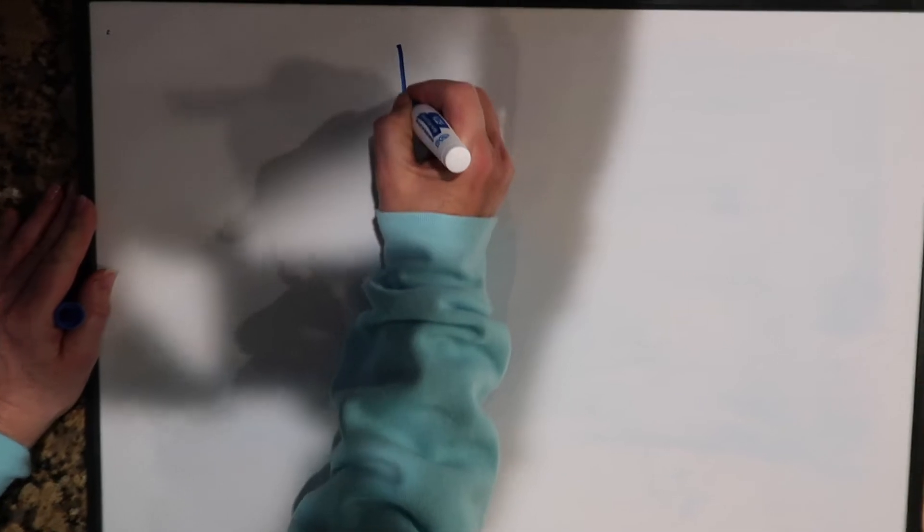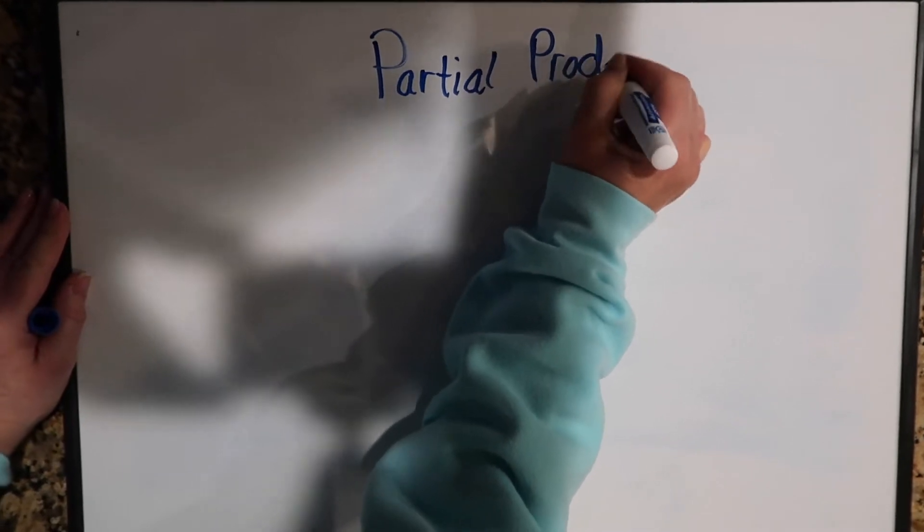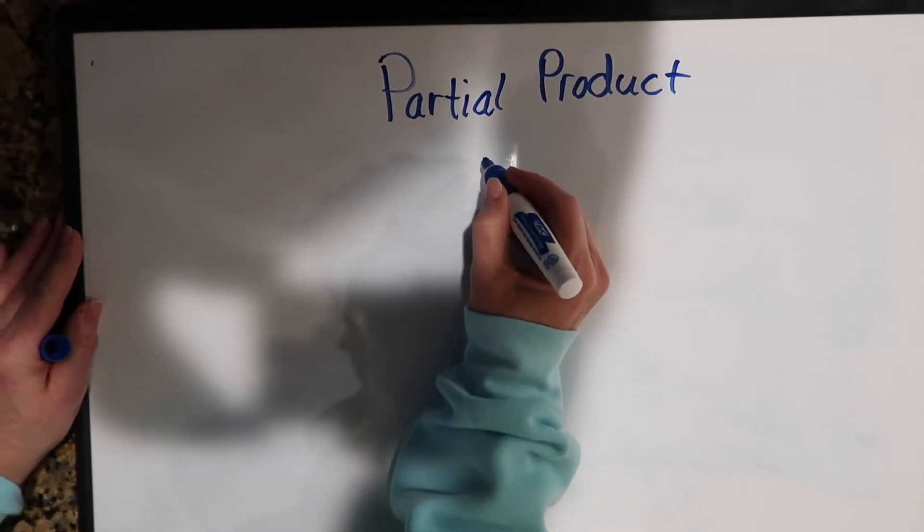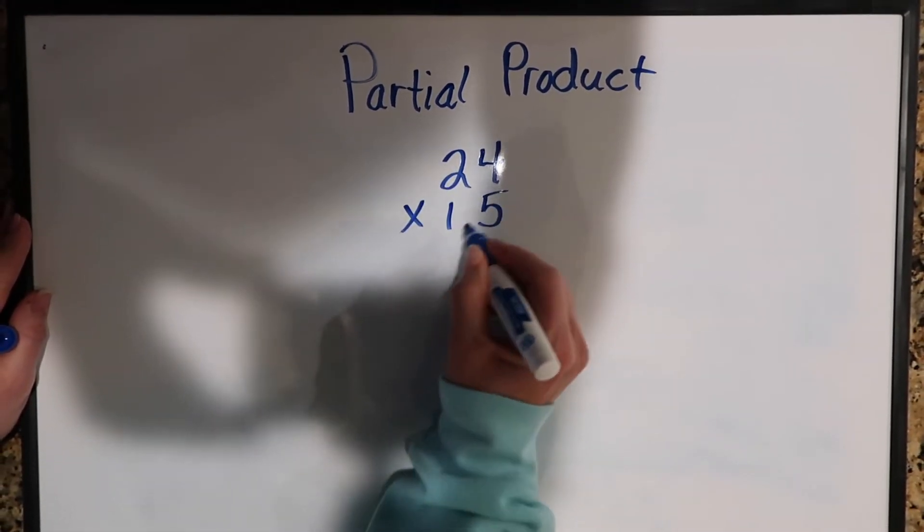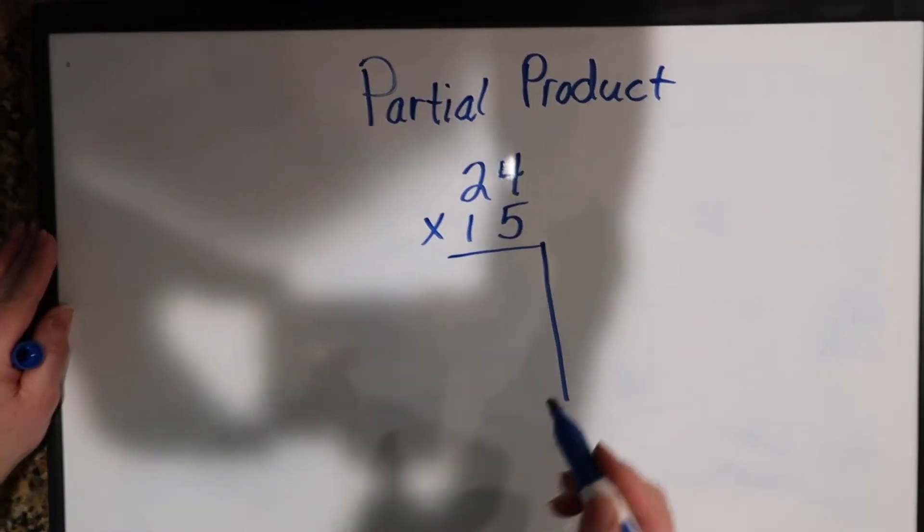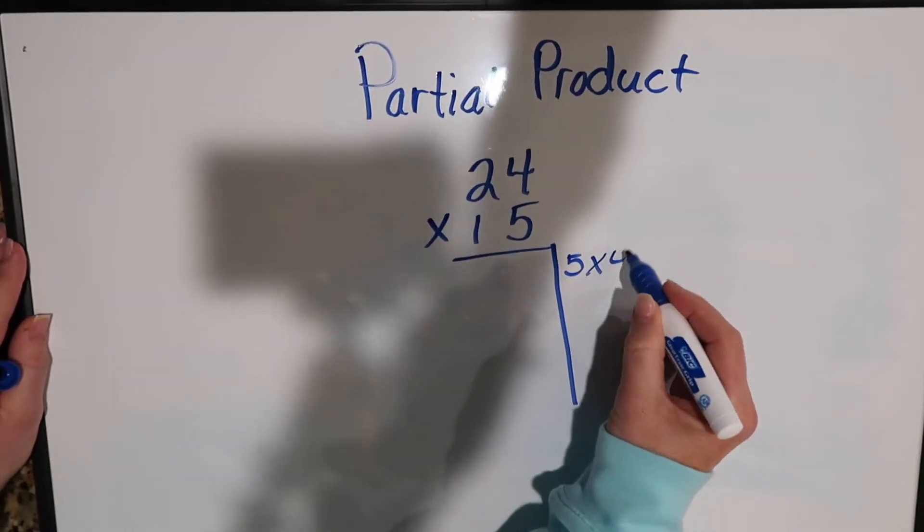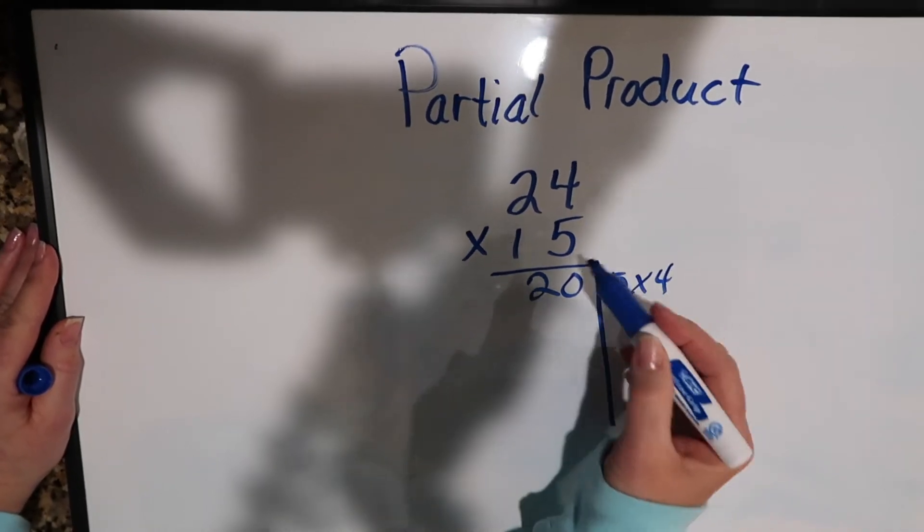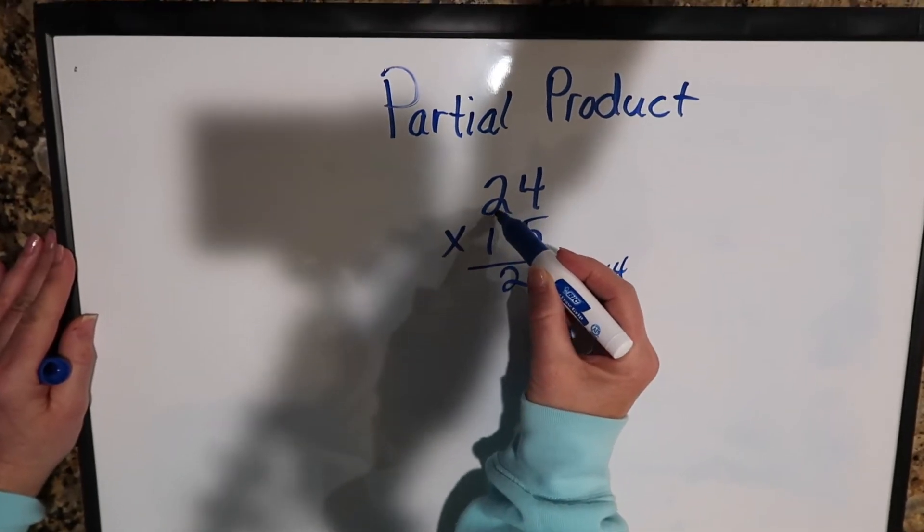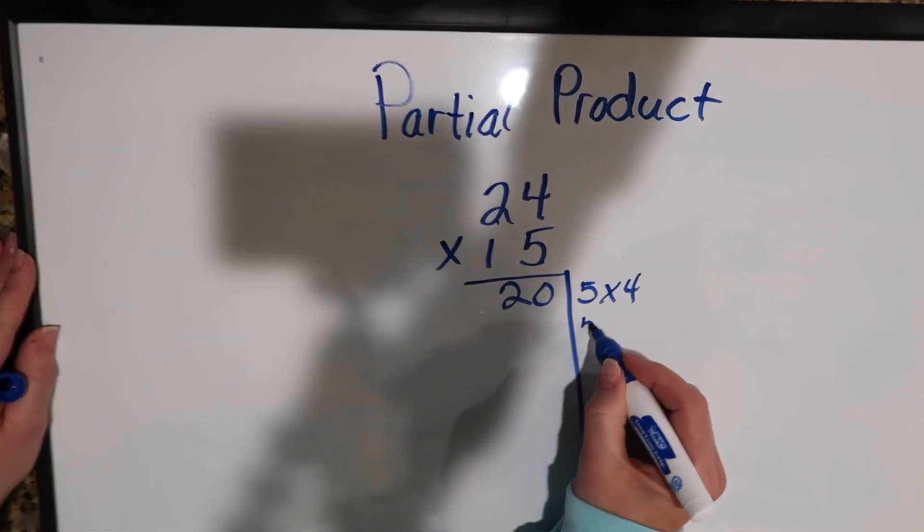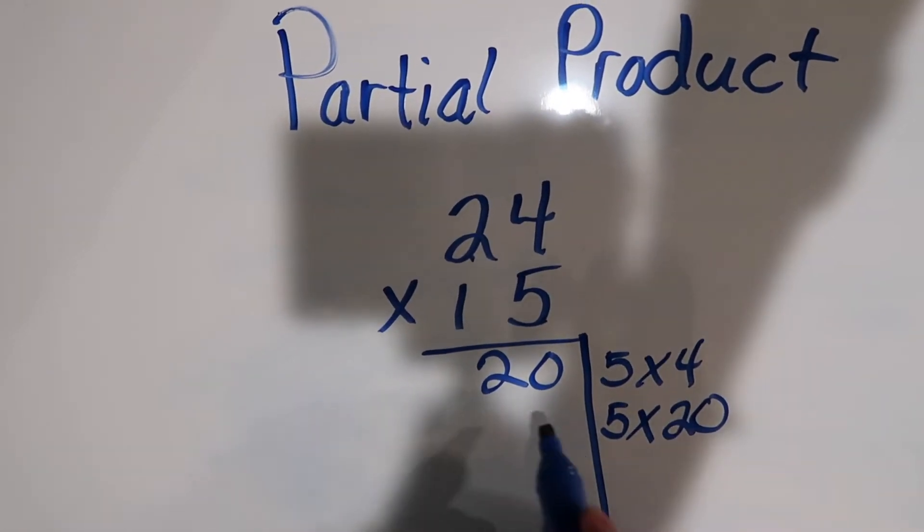The second strategy that we're going to go over is partial products. So our equation is 24 times 15. We're going to start in the ones column and go 5 times 4, which equals 20. Then we're going to stay with the 5 again and multiply going diagonal. So 5 times 2, but that's really a 20. So we're going to go 5 times 20, 5 times 2 is 10 and one more zero is 100.